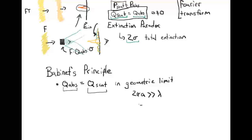Why the 2π? When light comes in, it can excite electrical currents back and forth across the grain, and it's these currents that cause absorption and scattering. But the longest current that can be excited is around the edge of the scatterer, and that distance is 2πa. So 2πa is the scale of the longest path length for a current excitable by incoming light. The other upshot is that the extinction coefficient — light missing from both absorption and scattering — is twice what basic geometry would suggest.